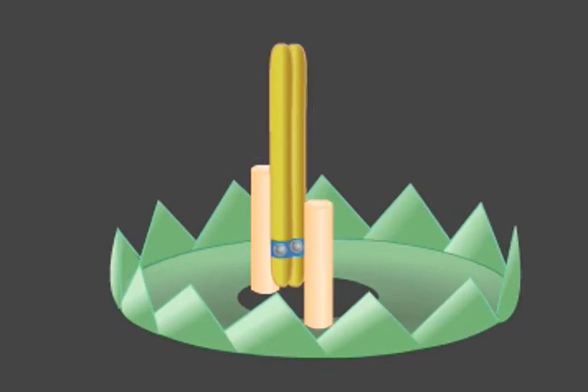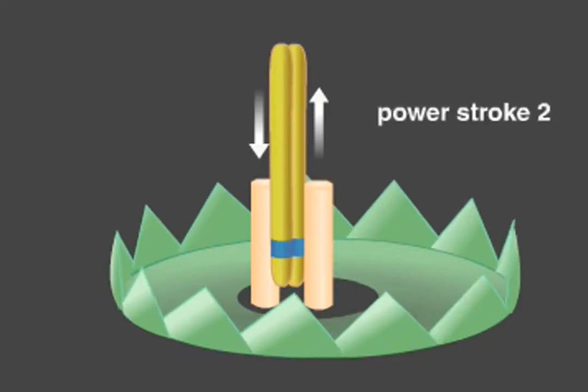At the end of the first power stroke, the two protons are released into the cytoplasm. The proton loss causes a second conformational change that drives the second power stroke, once again engaging the rotor.